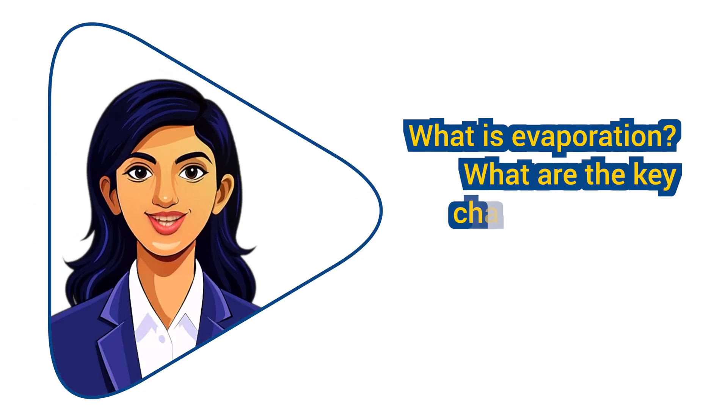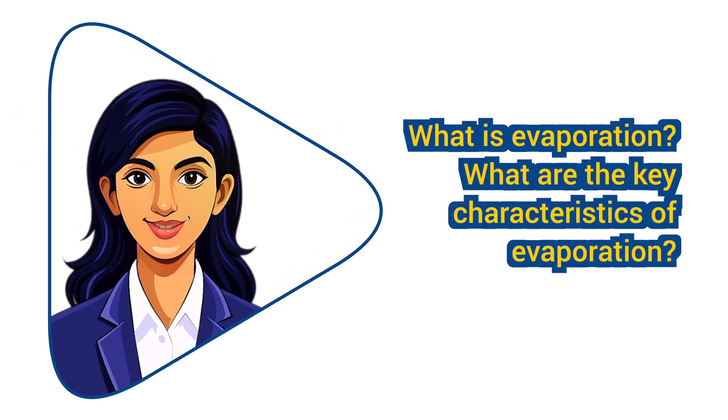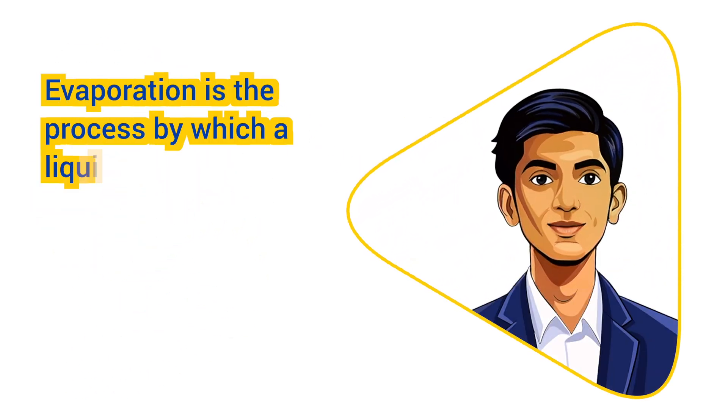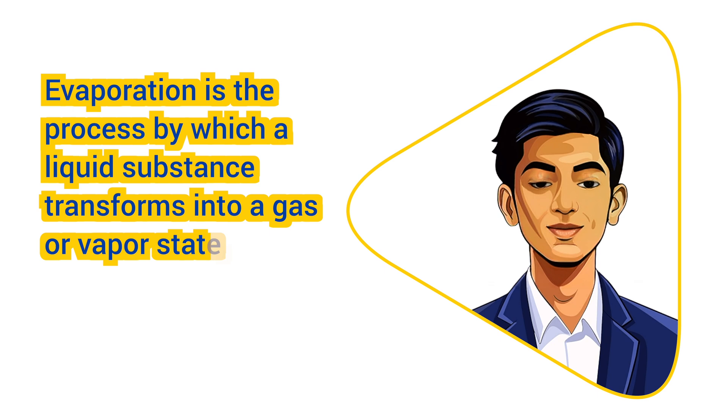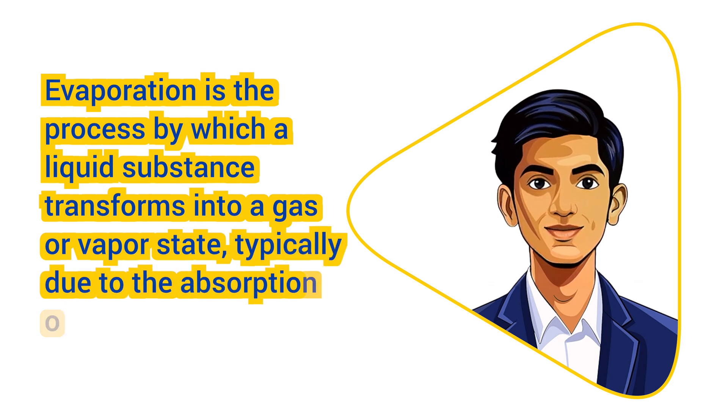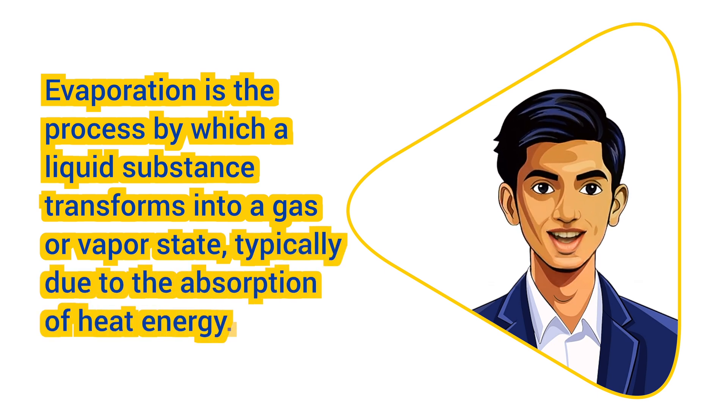What is evaporation? What are the key characteristics of evaporation? Evaporation is the process by which a liquid substance transforms into a gas or vapor state, typically due to the absorption of heat energy.